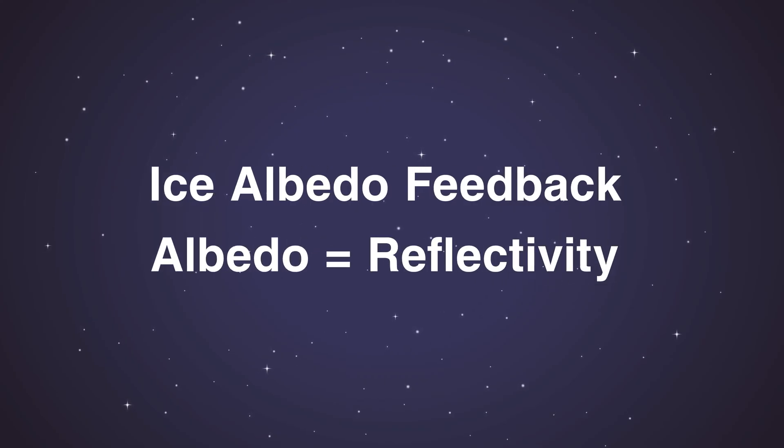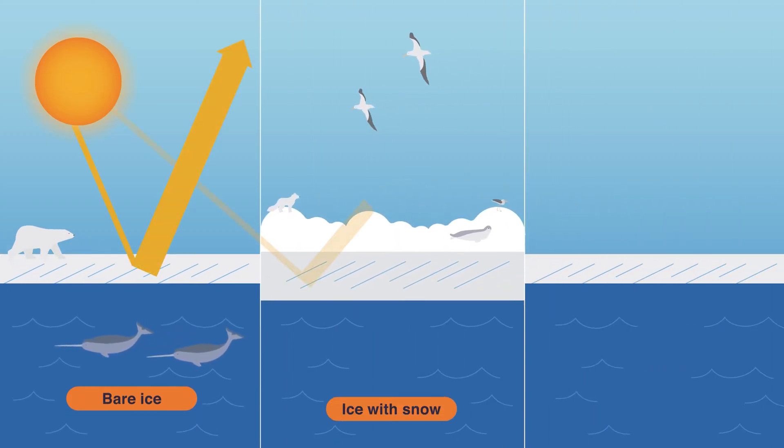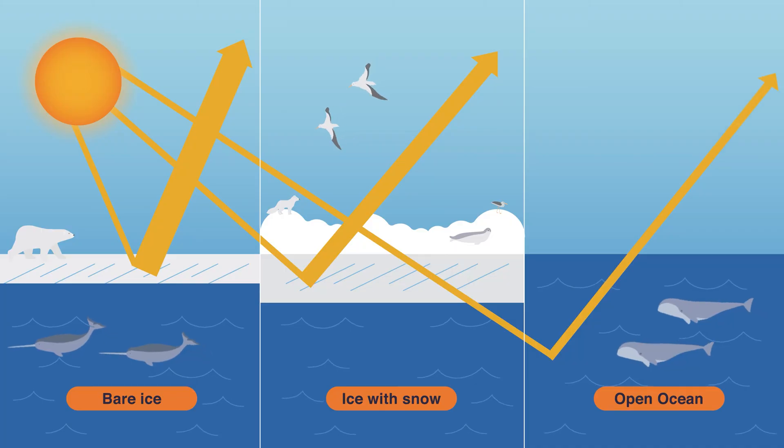Albedo meaning reflectivity. Ice is bright and therefore a highly reflective surface, with snow being slightly less and water being the least reflective.